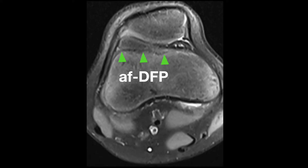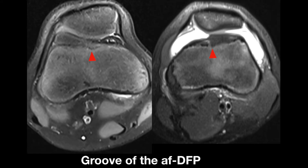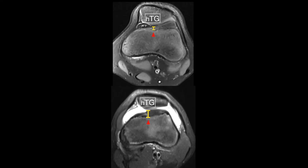We use the line of the anterior flange of the distal femoral physis as the reference to measure the lateral trochlear height and the height of the trochlear groove. In the area of the trochlear sulcus, the anterior flange of the distal femoral physis shows a very gentle depression, which we have termed the groove of the anterior flange of the distal femoral physis. This groove is a helpful landmark to measure the height of the trochlear groove.